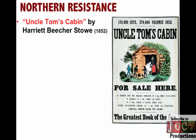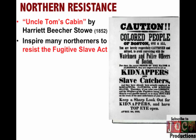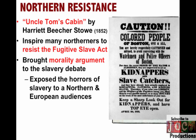Key idea from last time: in the 1850s the nation was becoming more and more polarized, and northern resistance to the Fugitive Slave Act was increasing day by day. And in 1852 a book comes out called Uncle Tom's Cabin by Harriet Beecher Stowe. This book basically inspires many northerners to resist the Fugitive Slave Act. The reason being is it brings the morality argument to the slavery debate. It exposed the horrors of slavery to a northern audience and also Europeans, especially in England and France. It was immensely popular.